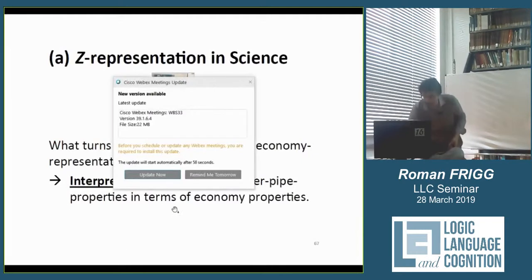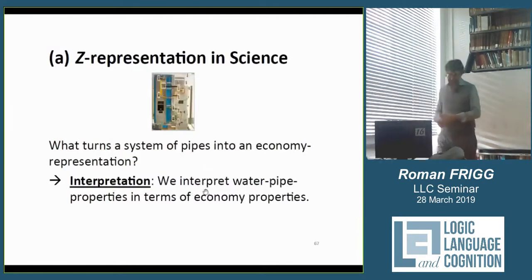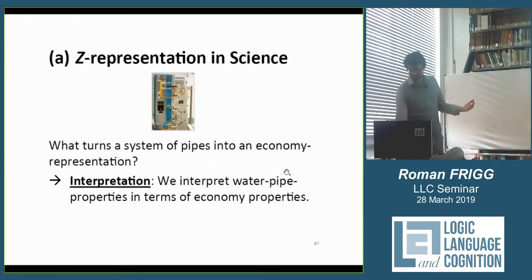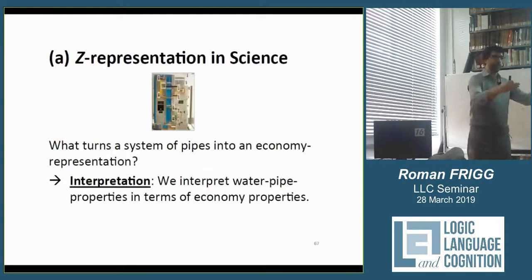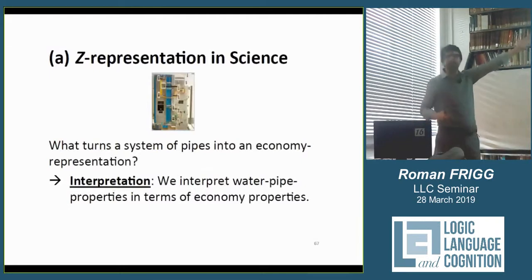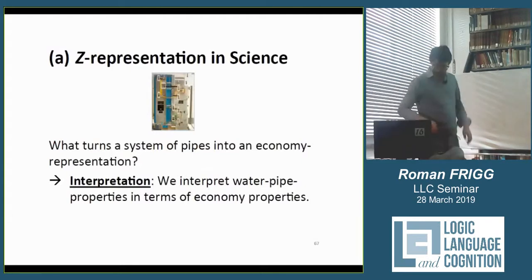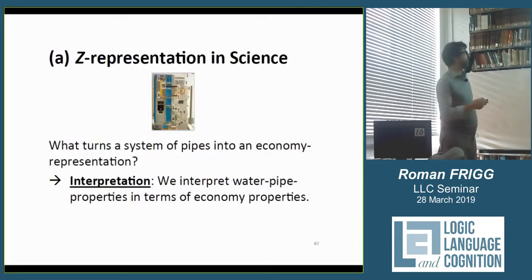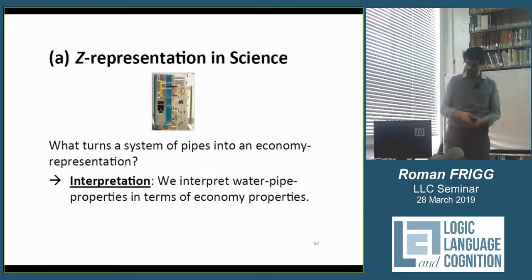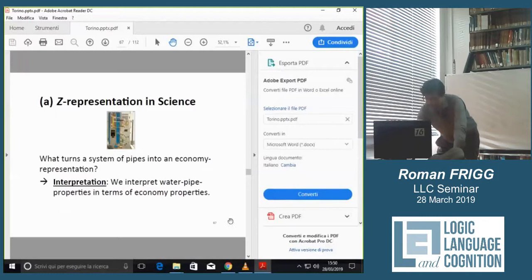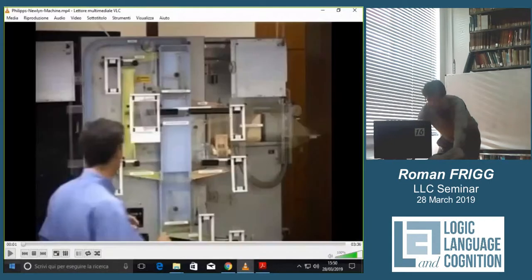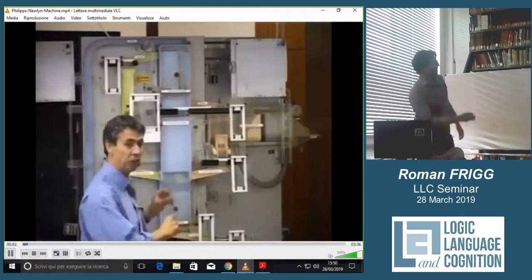We have to say this exemplifies certain economy properties and imputes these to the economy when used like this. We need to address: what is an economy representation in this context? How does this become an economy representation? How does it exemplify properties? And what do we mean by imputation? It turns out that in the case of science, this is a bit more complicated than in the case of the caricature. In the case of visual representations, people said we see something in the representation, or it belongs to a genre. Neither of this works here — you don't just see an economy in this, and neither does this thing belong to a genre. The idea now is that this becomes an economy representation if we put an interpretation on it.